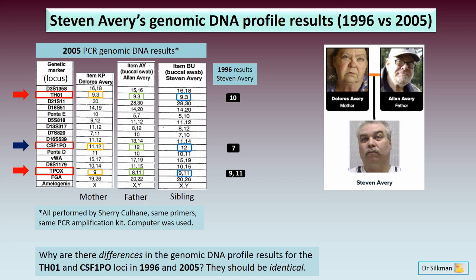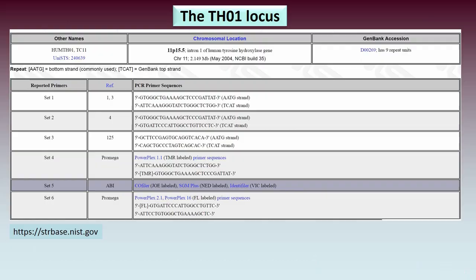For the TH01 locus, Dolores is homozygous 9.3, Alan is homozygous 9.3, so Stephen is expected to be homozygous 9.3 — and that's exactly what the 2005 result shows. However, in 1996 a 10 allele came up, which is a clear difference. For the CSF1PO locus in 2005, Dolores is heterozygous 11/12, Alan is homozygous 12, and Stephen inherited 12/12 — clearly homozygous 12. Yet in 1996 a 7 allele result appeared, which is a major discrepancy.